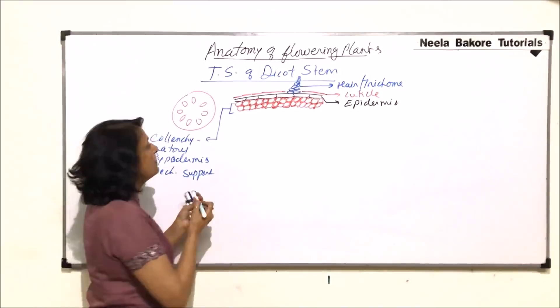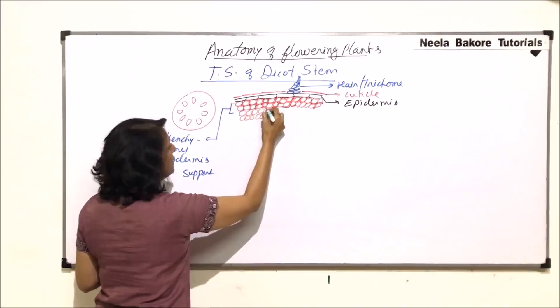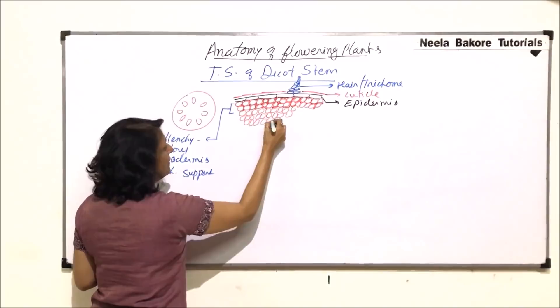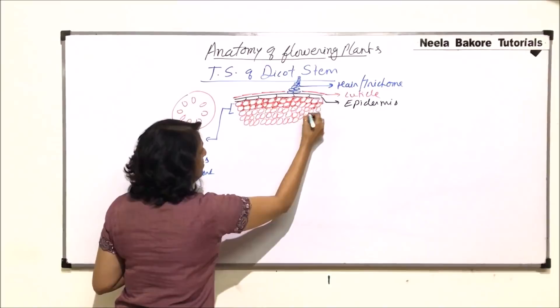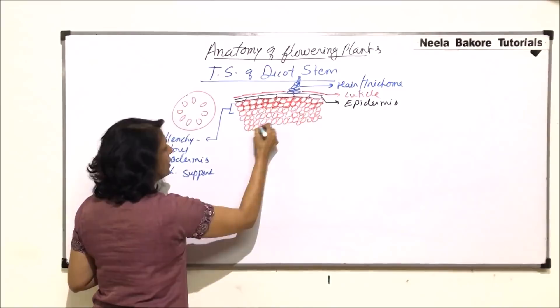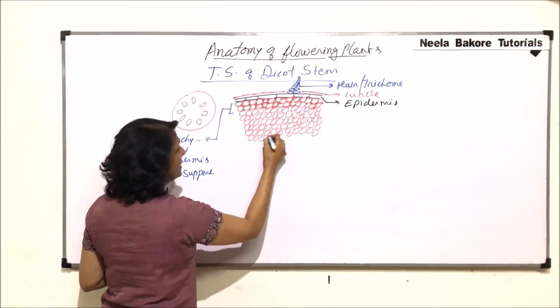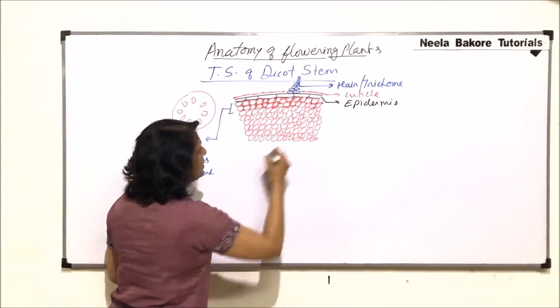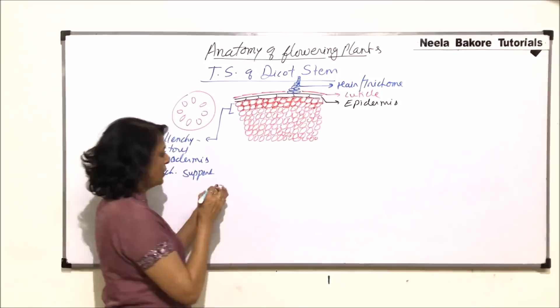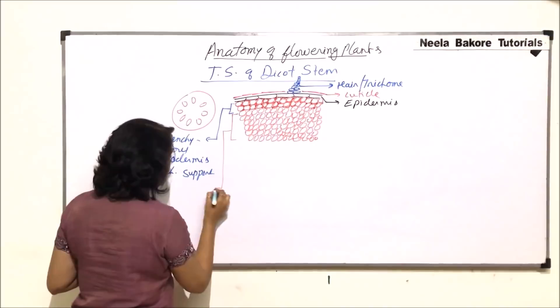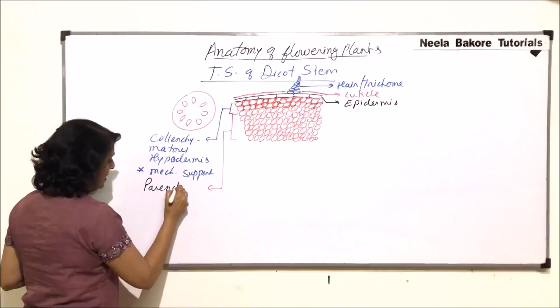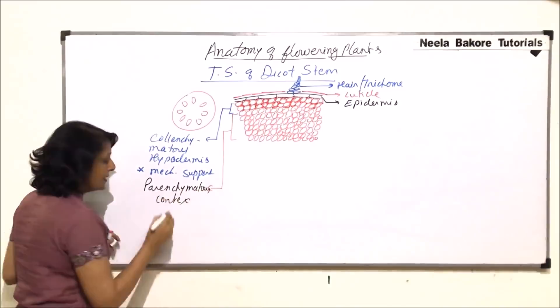Beneath the hypodermis are present parenchymatous cells, which are loosely arranged, so we can see the intercellular spaces. In collenchyma we find thickenings and loss of intercellular spaces, whereas in parenchyma those spaces are clearly visible. The innermost layer — this is known as the parenchymatous cortex. This is the second layer: the outer one is hypodermis, then the parenchymatous cortical layer.